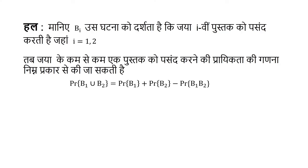हम देखेंगे कि हमारे पास दो घटनाक्रम हैं, जो कि B1 और Pustak 1, Pustak 2 हैं। (We will see that we have two events, which are B1 and Pustak 1, Pustak 2.)